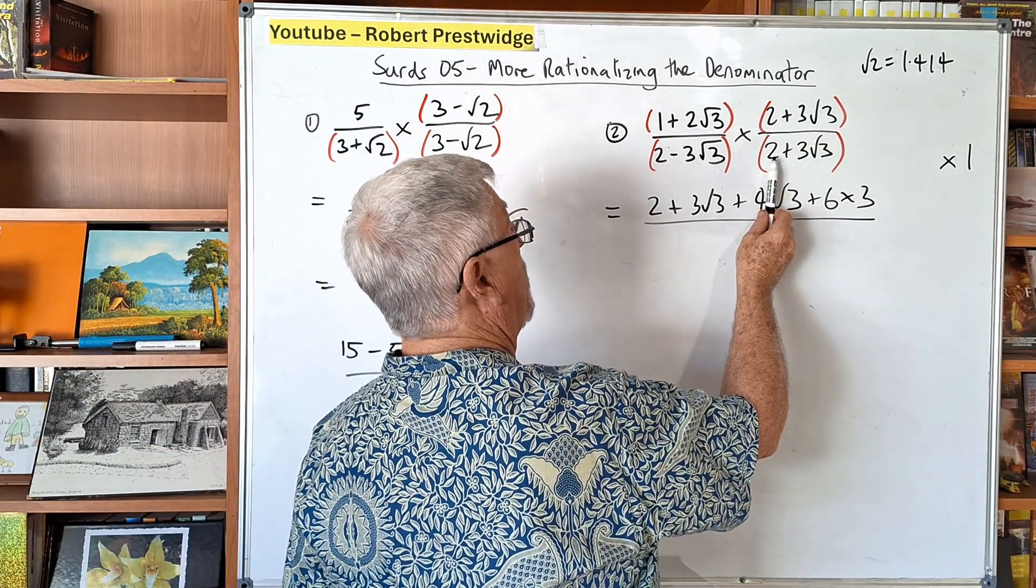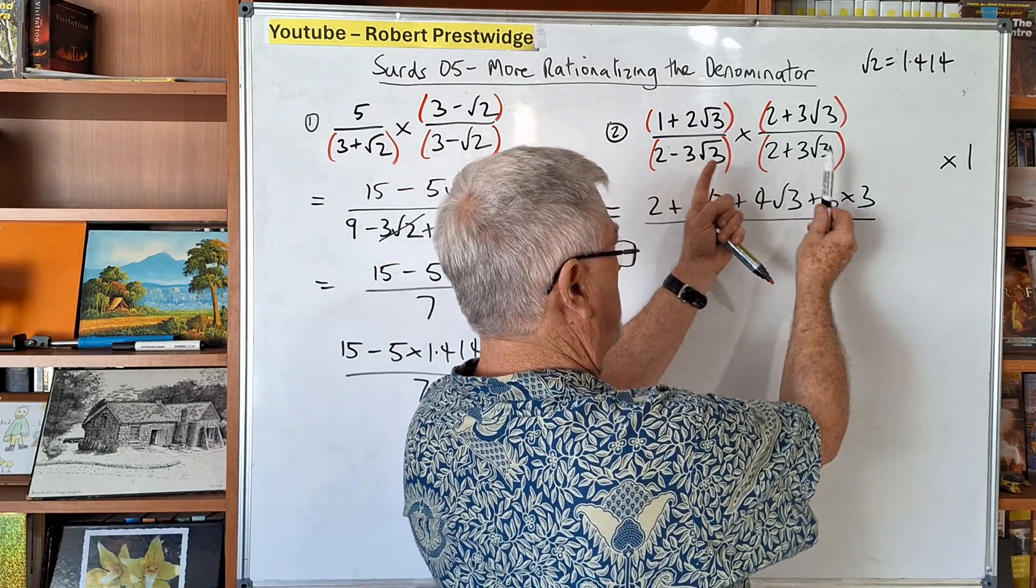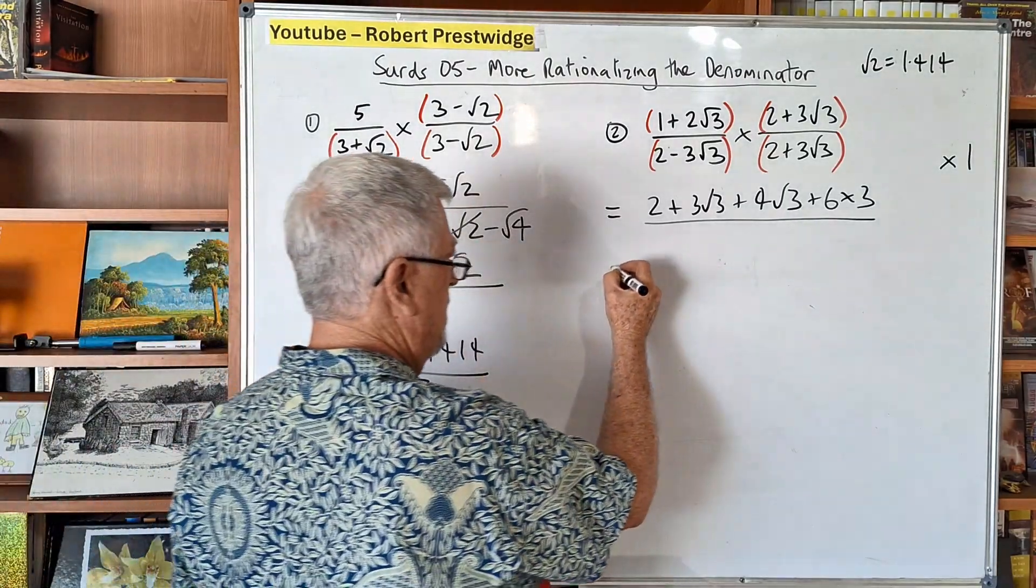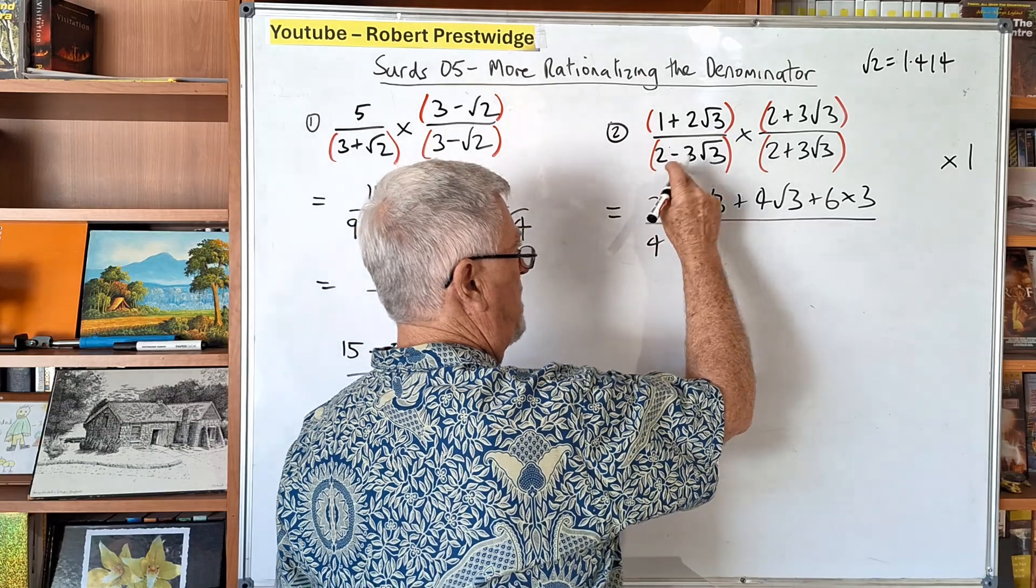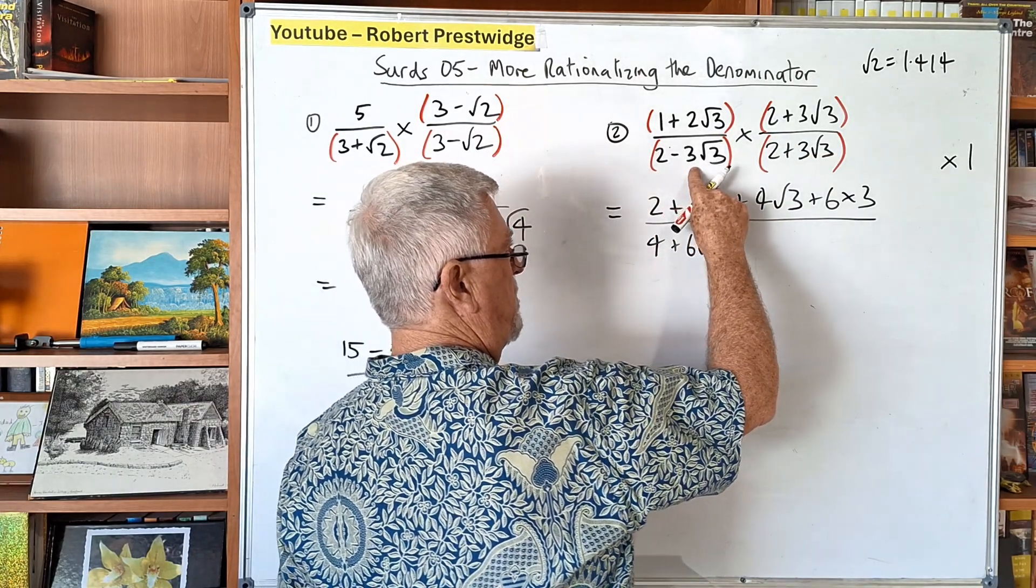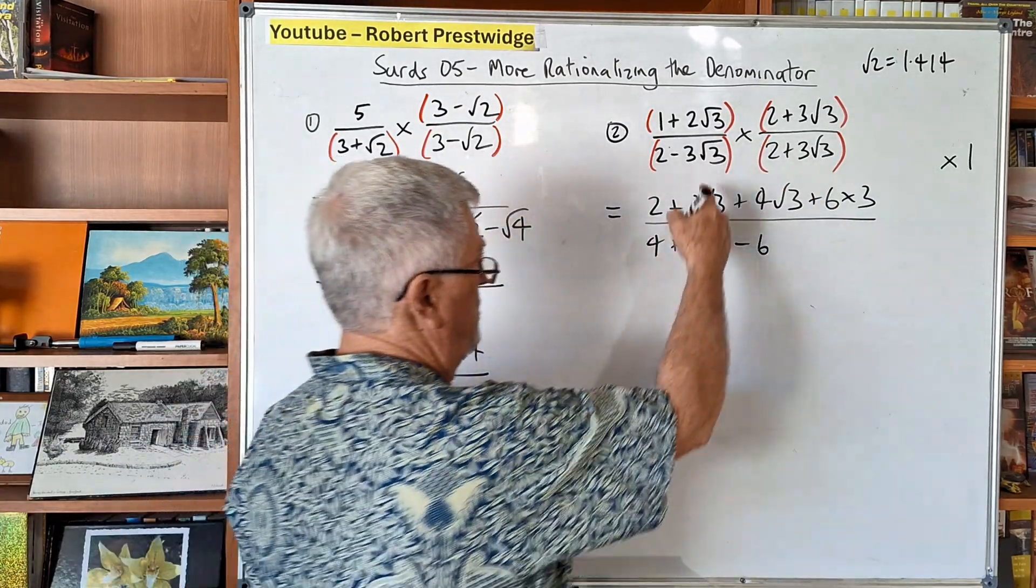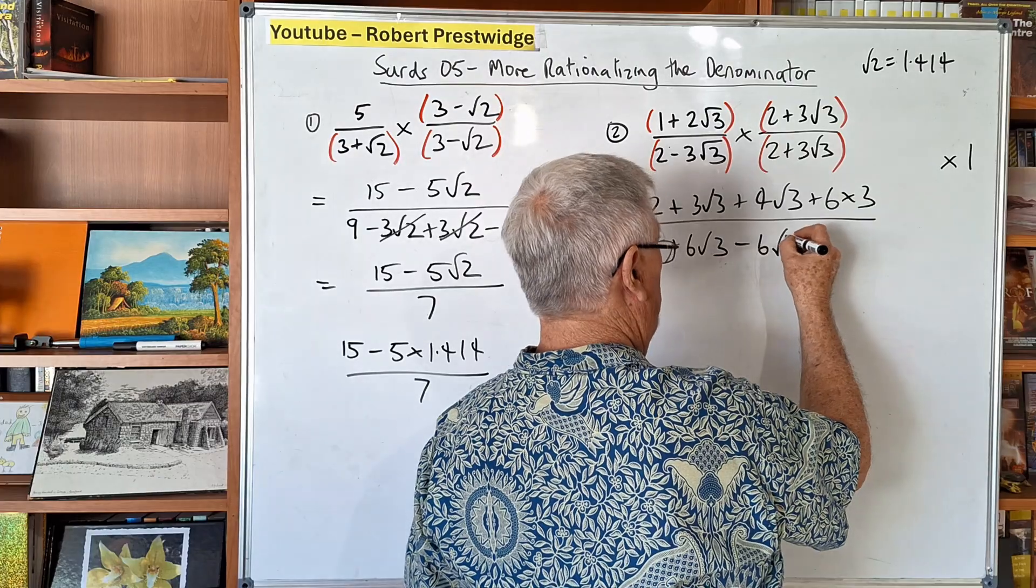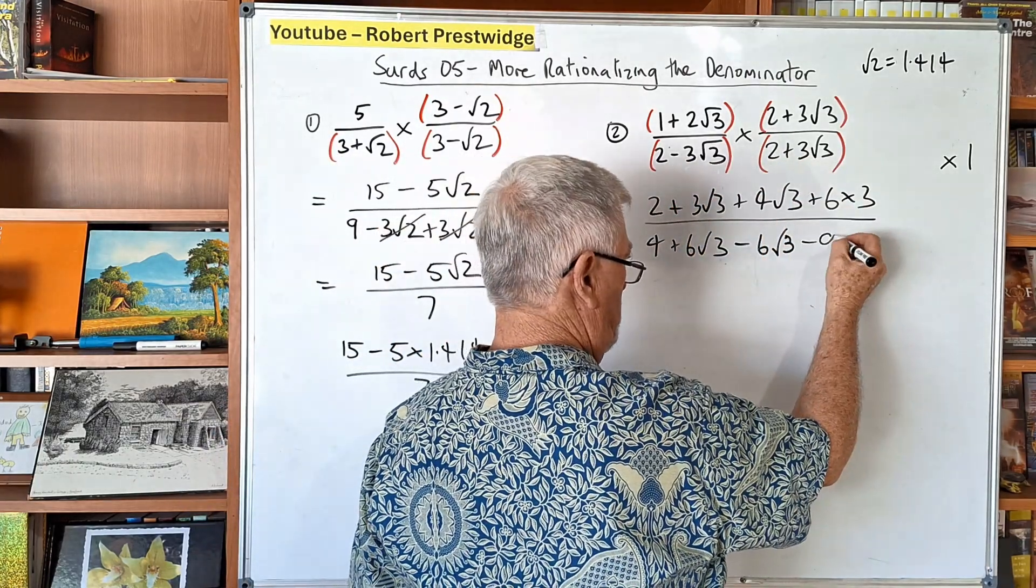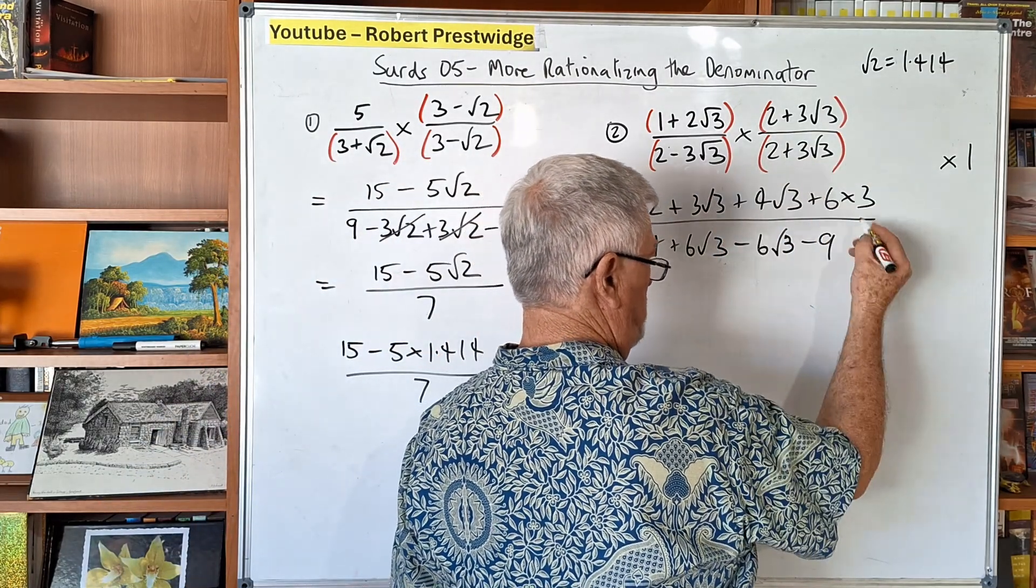Next part here, 2 times 2 is 4. If you want to, all you have to actually do is multiply those two and multiply those two, because it's a difference of two squares, those two terms are going to eliminate each other. But we'll do it before. 2 times 2 is 4. 2 times 3 is 6 root 3. Now minus 3 root 3 times 2. Minus 3 by 2 is minus 6, and then you've got the root 3. Minus 3 times 3 is minus 9. Root 3 by root 3 is root 9, which is 3.